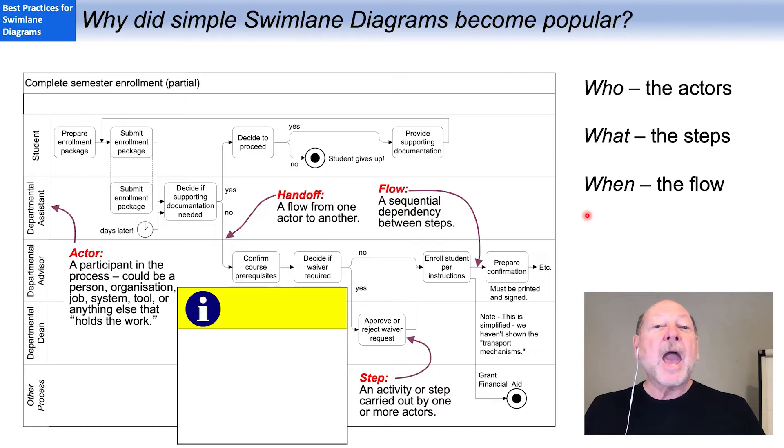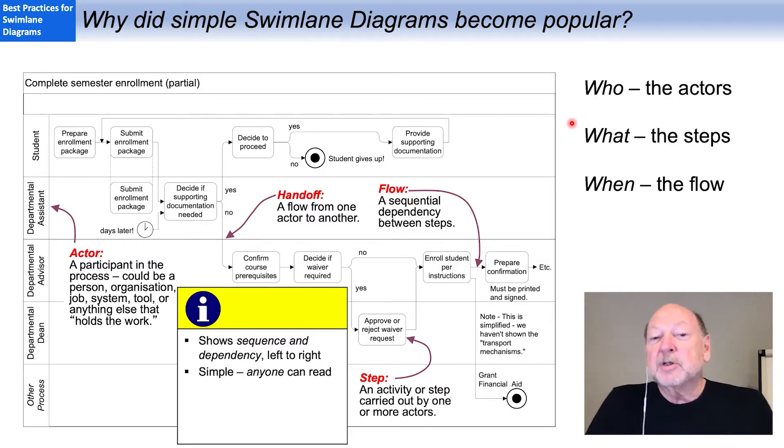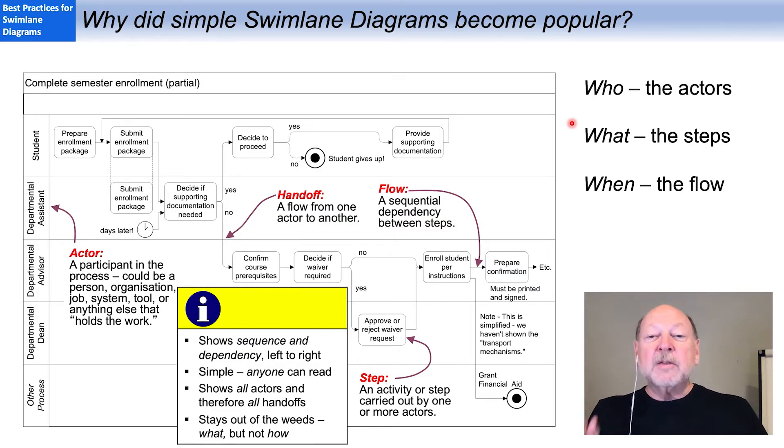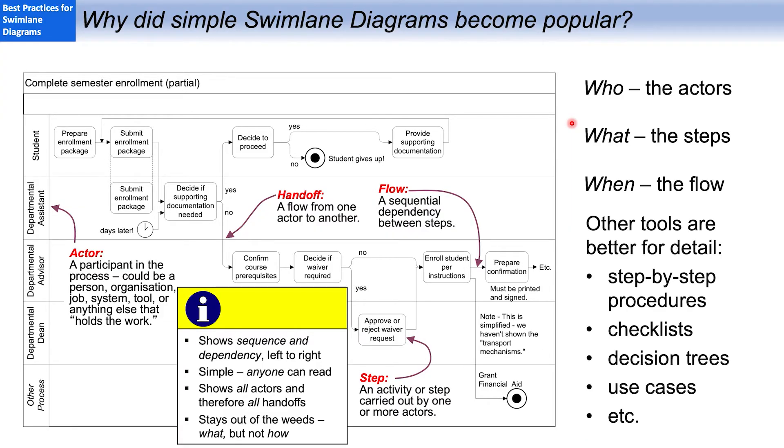The flow lines, and if you draw these according to some of the guidelines I'm going to share, they're very popular with business people. First, because sequence and dependency are clearly visible from left to right. They're simple enough that anyone can follow one of these. They show all of the actors and therefore all interactions and handoffs.